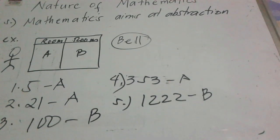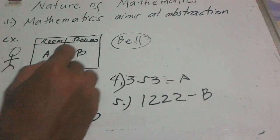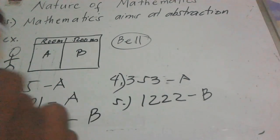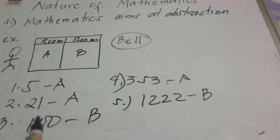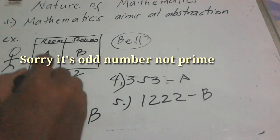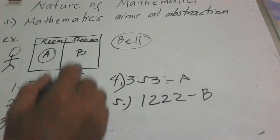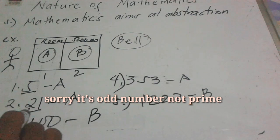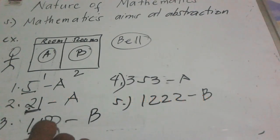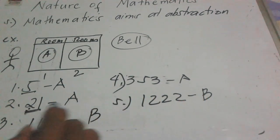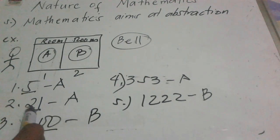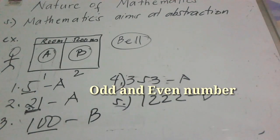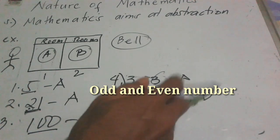So what is the hint or pattern here? The hint is: if the number is a prime number, Pedro is in room A. If the number is even, Pedro is automatically in room B. For example, 100 is even — room B. Twenty-one is an odd number. Five is checked — its last digit relates to even. Three hundred fifty-three is odd so it goes to room A. One thousand two hundred twenty-two ends in two, so it is even — Pedro is in room B.